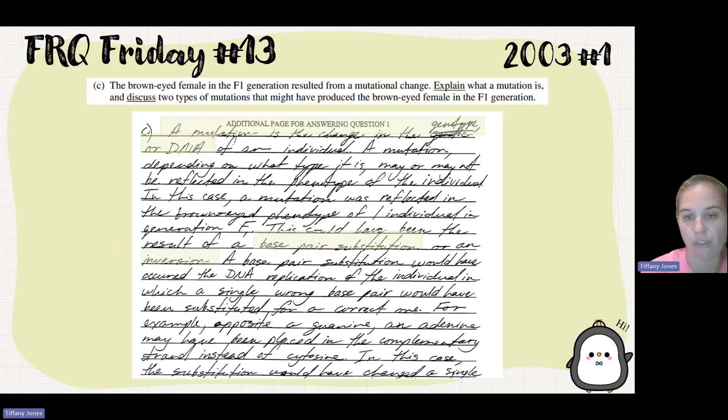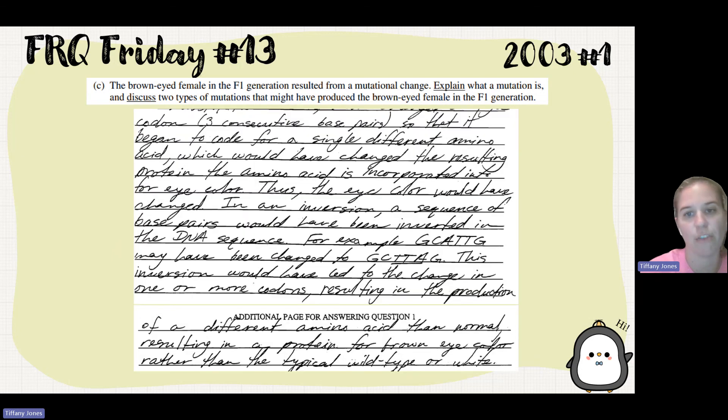A base pair substitution would have occurred during DNA replication of the individual in which a single wrong base would have been substituted for the correct one. For example, opposite a guanine may have been placed in the complementary strand instead of cytosine. This case, substitution would have changed a single codon in the three base pairs so that it began to code for a different amino acid which would have changed the resulting protein.